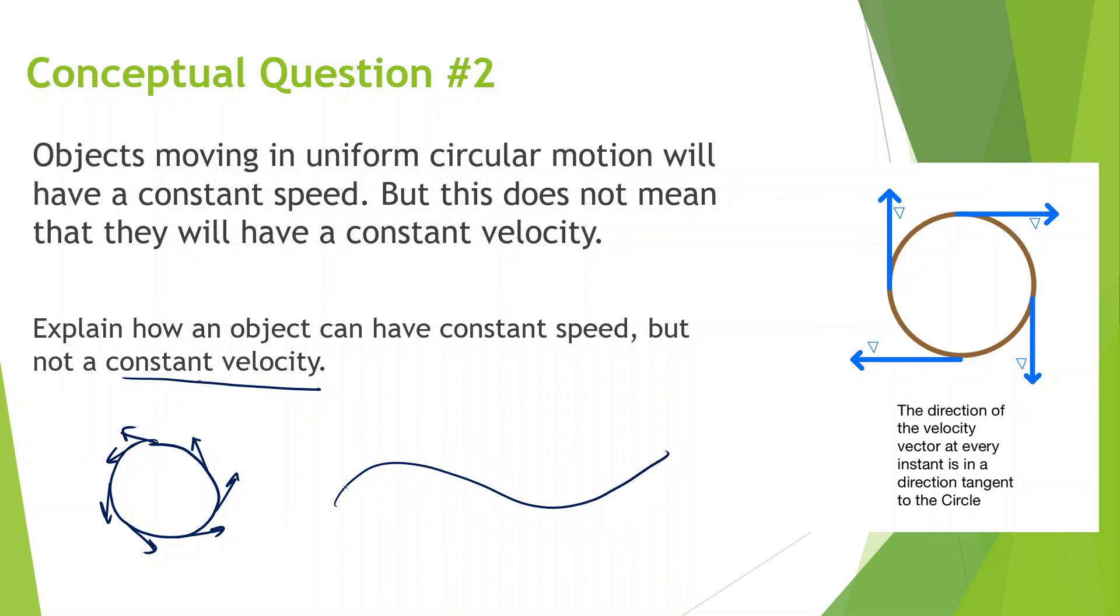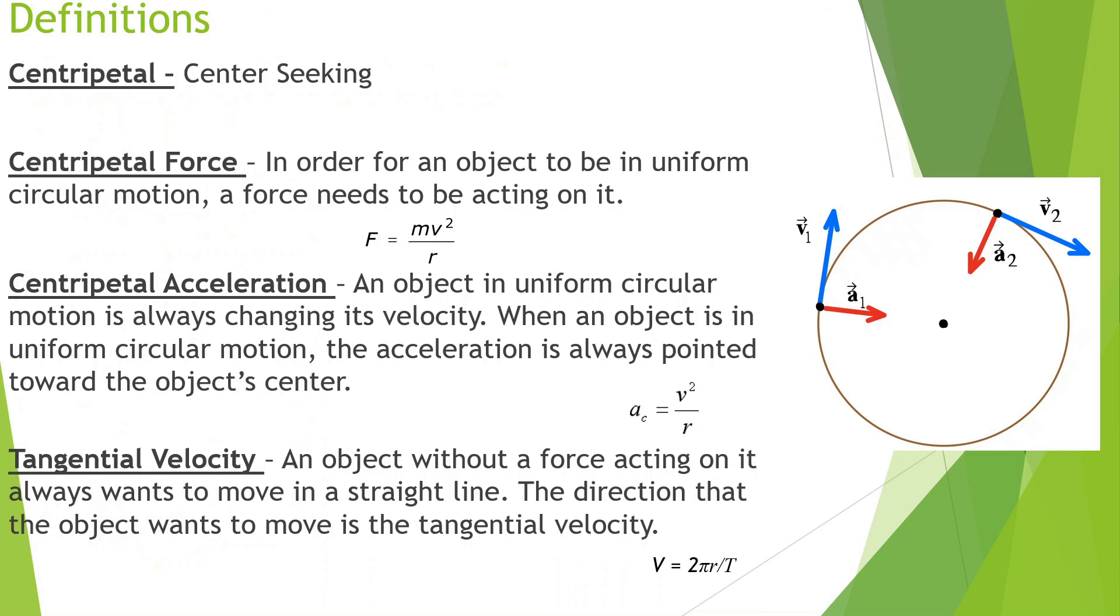So something going in a curve like this, even though it might have the same speed throughout the whole thing, the direction is always changing, and that's why there's going to be an acceleration. We call that acceleration centripetal acceleration.